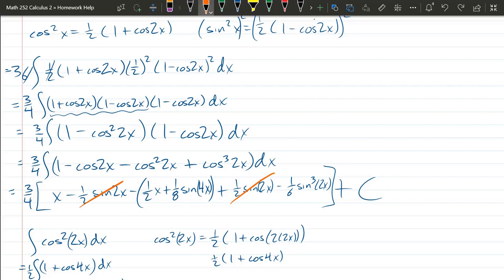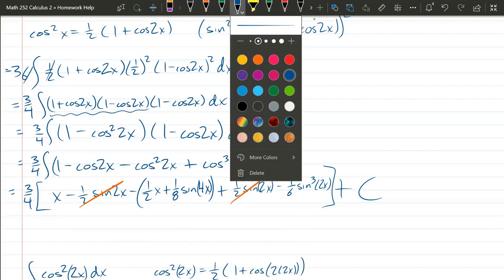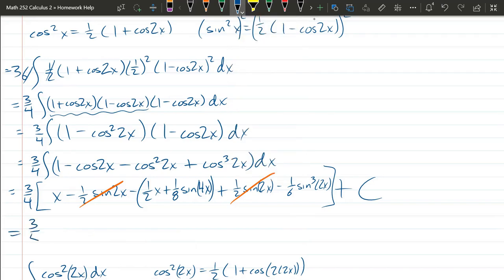So x minus 1 half x is negative 1 half x. I'm going to cheat and add some extra room here. 3 fourths x minus 1 half x is 1 fourth x minus 1 eighth sine 4x minus 1 sixth sin cubed 2x plus c.